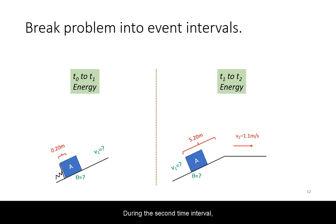During the second time interval, the mass is free of the spring, sliding up the incline, after which it is recorded to have a final velocity.